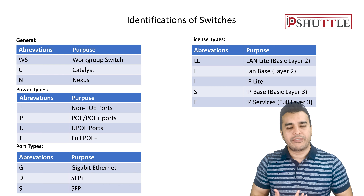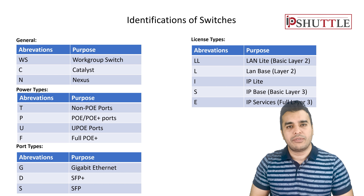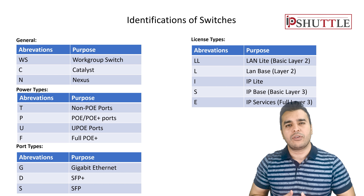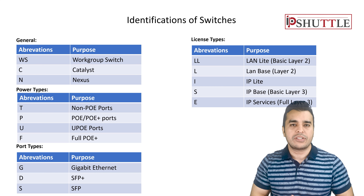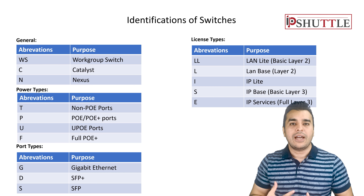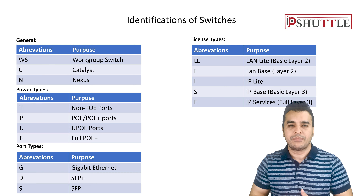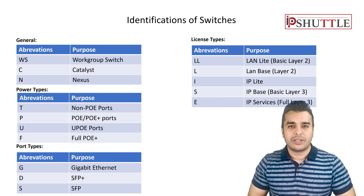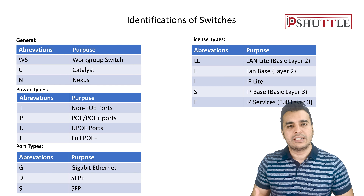The first thing we will look into is the identification of switches. There are a lot of abbreviations in Cisco switches, and every model Cisco releases has abbreviations, but they are not publicly documented. These are more like assumptions from their data sheets that a part number represents a certain feature. There are no hard and fast rules, but these are the closest we have come.